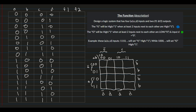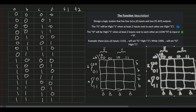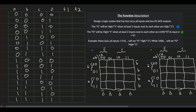Now we're going to look at our outputs. F1 is color-coded blue and F2 will be green. Since we need two kmaps, we copy the empty kmap and place them side by side. For F1, the output will be 1 when at least two inputs next to each other are high (1).